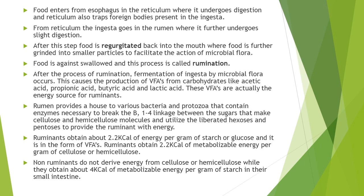At this point saliva causes partial digestion of the regurgitated matter and also causes its neutralization, because this regurgitated matter is coming from the rumen whose environment is slightly acidic, while the pH of saliva is basic. So saliva causes the neutralization of the ingesta which has been regurgitated into the mouth. After further chewing and digestion with the help of saliva, this regurgitated matter is again swallowed, and this reswallowing process is called rumination.